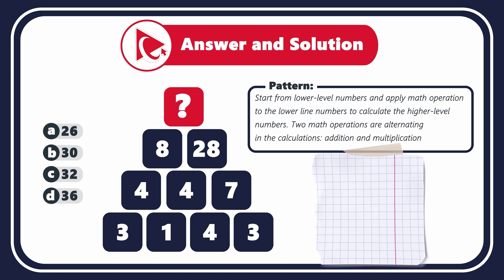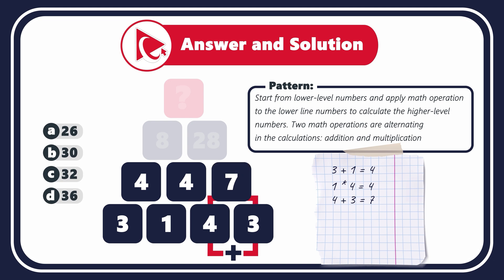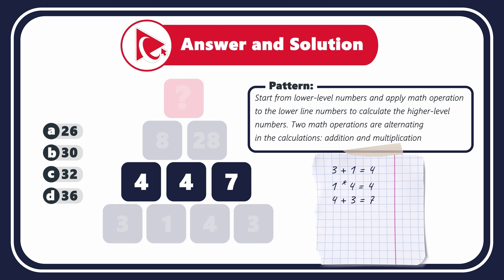Let's look at the example so you get better understanding. Let's look at the numbers in the bottom left corner. 3 plus 1 equals 4. But 1 multiplied by 4 equals 4. Remember I told you that addition and multiplication are alternating. So the next one would be addition again. 4 plus 3 equals 7. Let's go to row 2. 4 plus 4 equals 8.